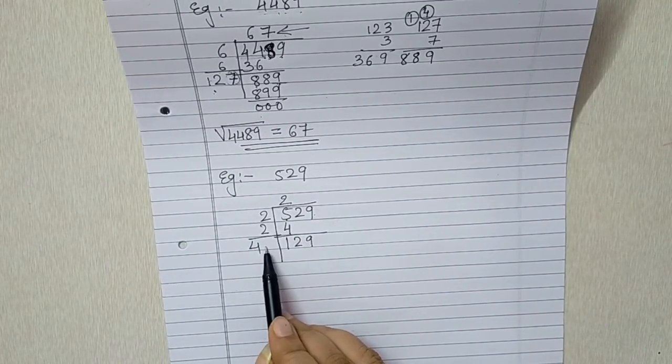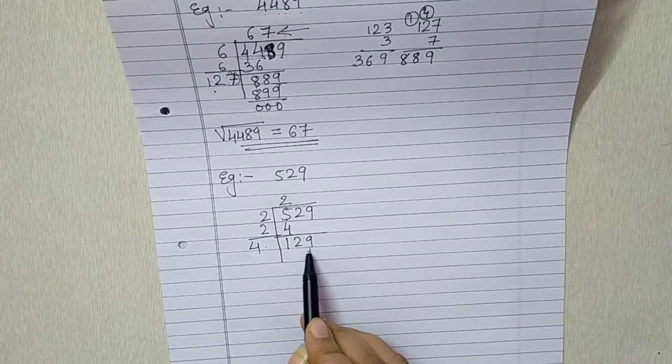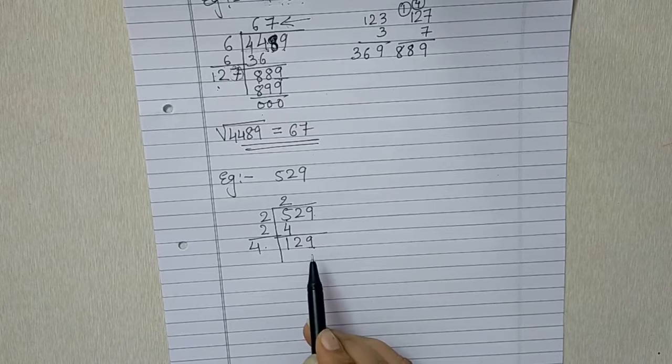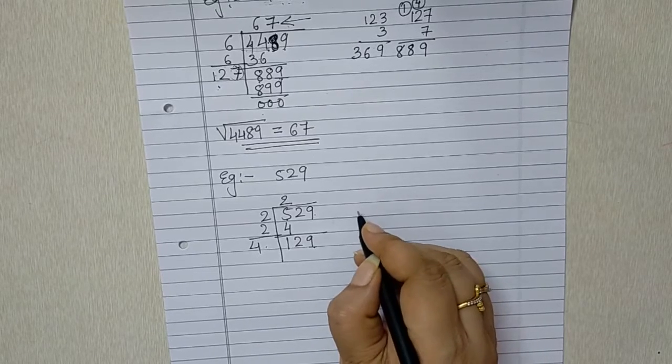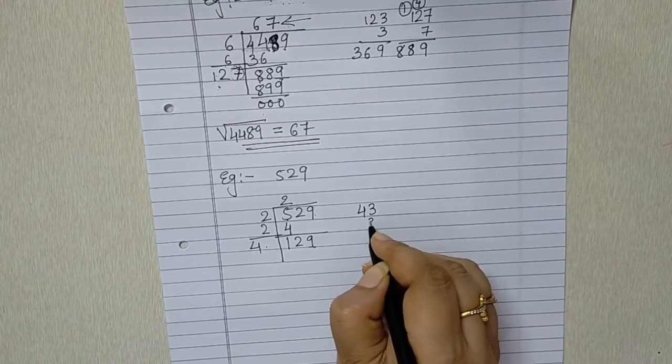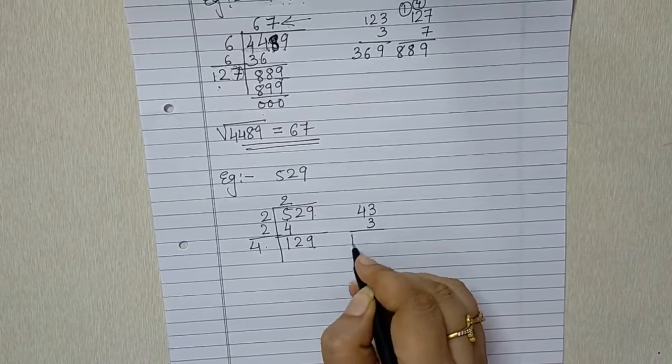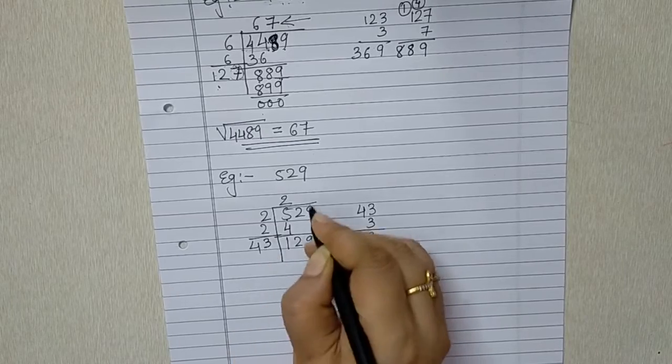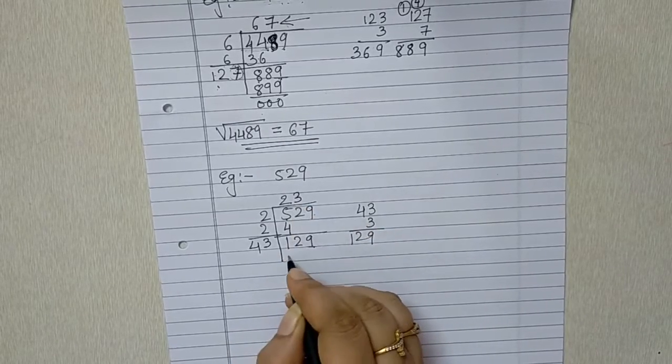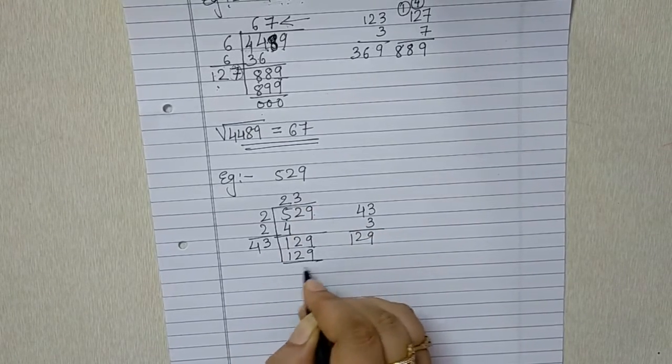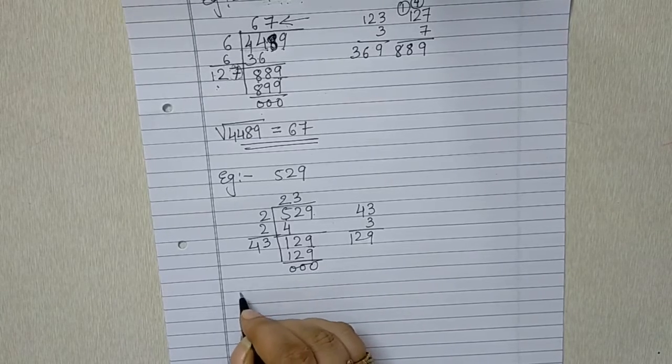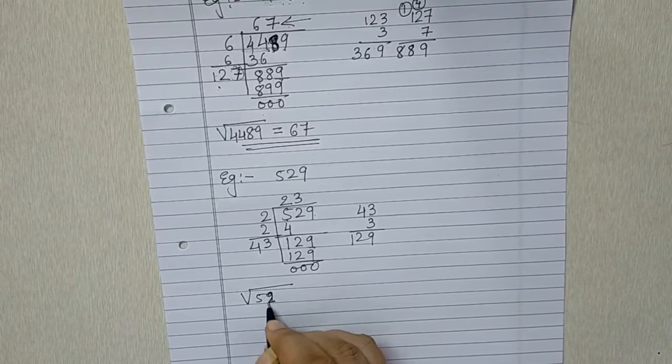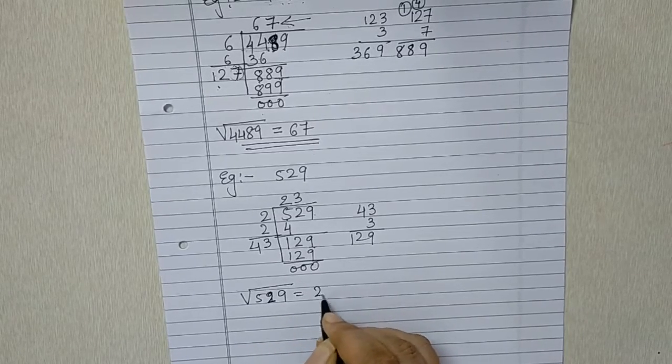Now what we should add over here will be decided by this last number. Again, last number is 9. So we need to add either 3 or 7. Let us check with 3. 43×3 is 129. So we will be adding 3 over here. Here we got the remainder 0. So the square root of 529 is 23.